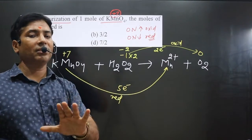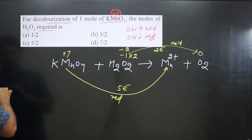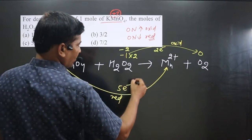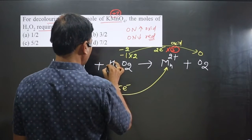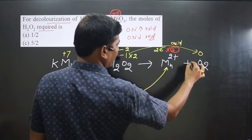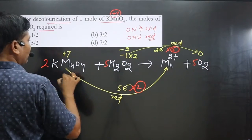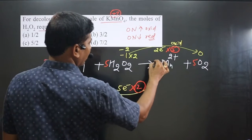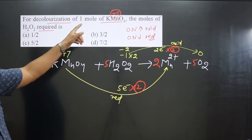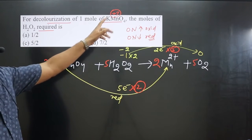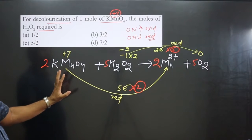The reduction half involves 5 electrons and the oxidation half involves 2 electrons. We criss-cross these numbers: multiply KMnO₄ and Mn²⁺ by 2, and multiply H₂O₂ and O₂ by 5. So the balanced equation has 2 moles of KMnO₄ reacting with 5 moles of H₂O₂. Now we can answer the question: for decolorization of 1 mole of KMnO₄, how many moles of H₂O₂ are needed?